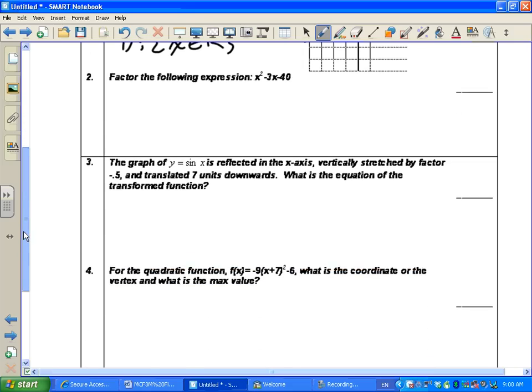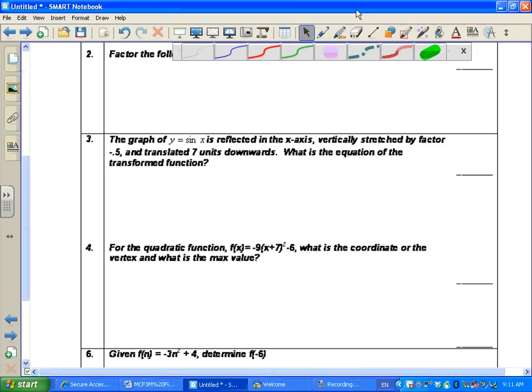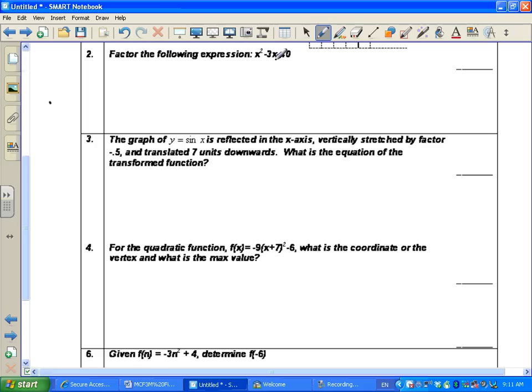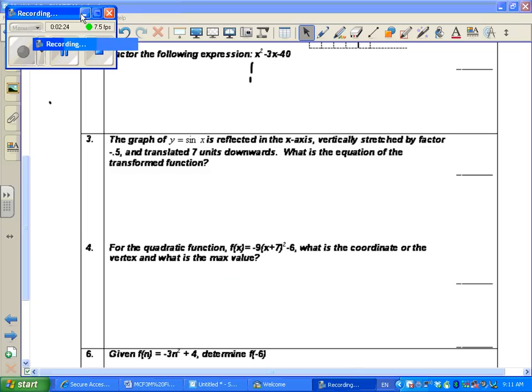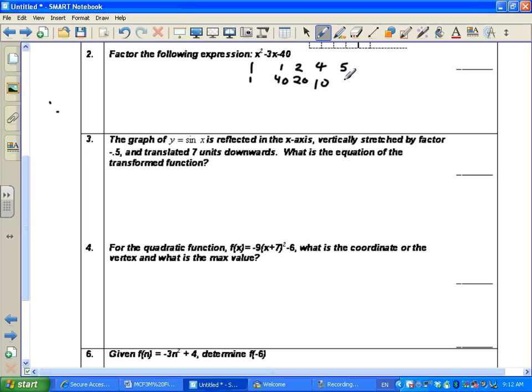Second question. Question number 2 says to factor this expression. So when we're factoring, we need to find the factors of the first term. The coefficient is 1, so the factors of 1 are just 1 and 1. Factors of the last term, 40. So we have 1 and 40, 2 and 20, 4 and 10, and 5 and 8.